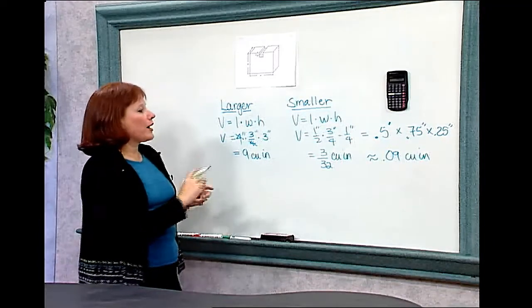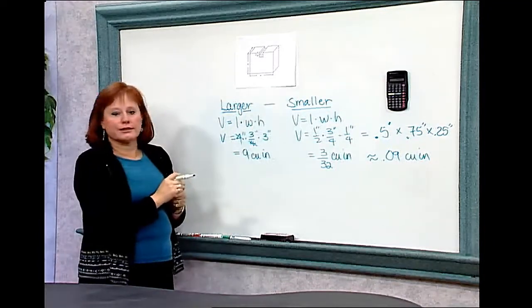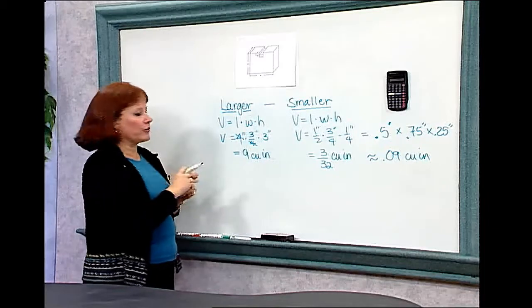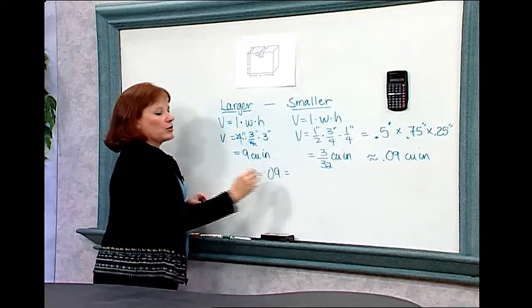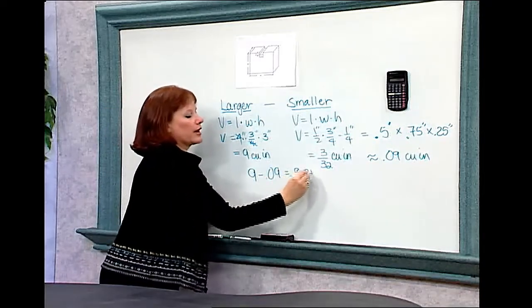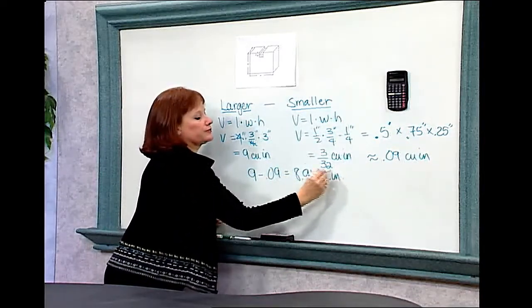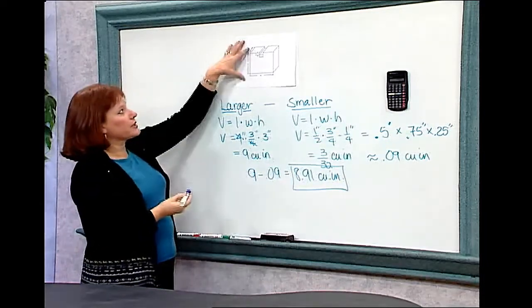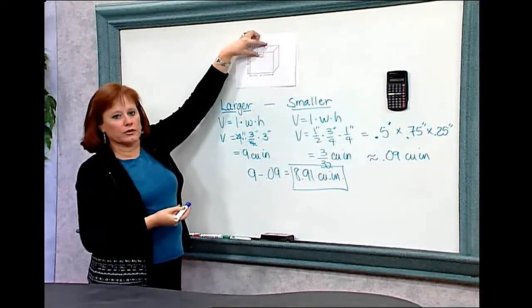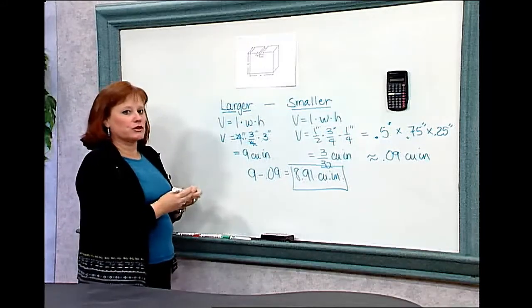Now my strategy required for me to take the larger minus the smaller to find the resulting volume. I'm going to take 9 minus 0.09, which will give me a final volume of 8.91 cubic inches. What I have found is the volume of this rectangular prism with a notch cut out of the top.